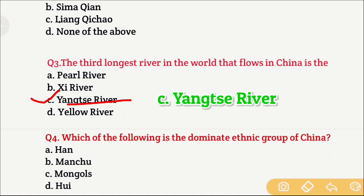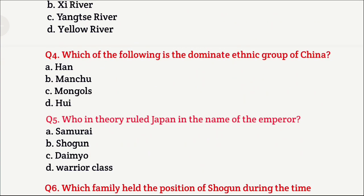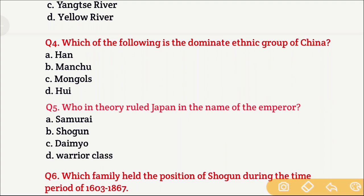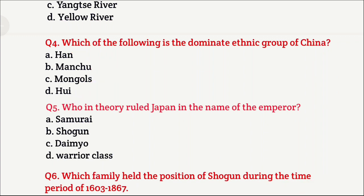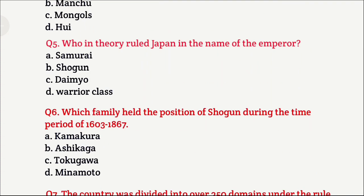Question 4: Which of the following is the dominant ethnic group of China? That is, among all ethnic groups, which is the most important and dominant one — the one that most people living in China belong to? Option A is Han, Option B is Manchu, Option C is Mongols, and Option D is Hui. The right answer is Option A, which is Han.